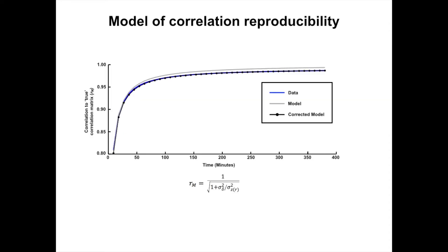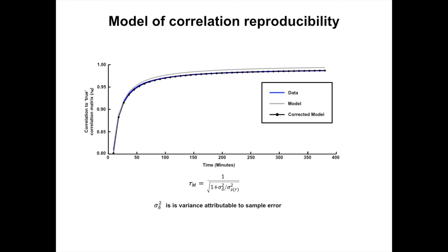This empirical curve follows very closely a model of correlation and reproducibility that depends only on two parameters: the sampling error and the range of correlation values in the set of parcel pairs. The very small discrepancy between the model and the empirical data can be explained by residual sources of day-to-day variability — for example, that on some days the subject was caffeinated and fed, while on others he was fasting in preparation for a blood draw. These unaccounted sources of variability can be incorporated into a corrected model that nearly perfectly reproduces the empirical data.